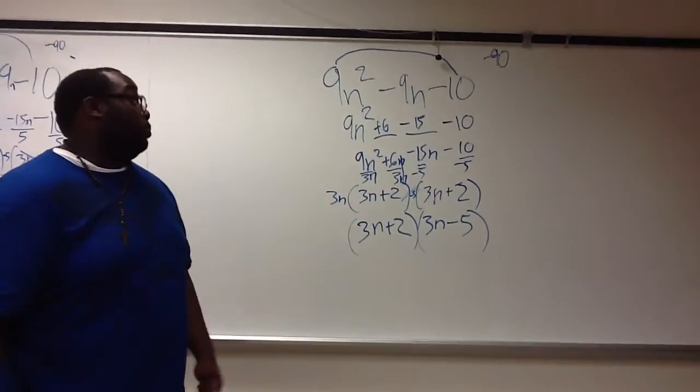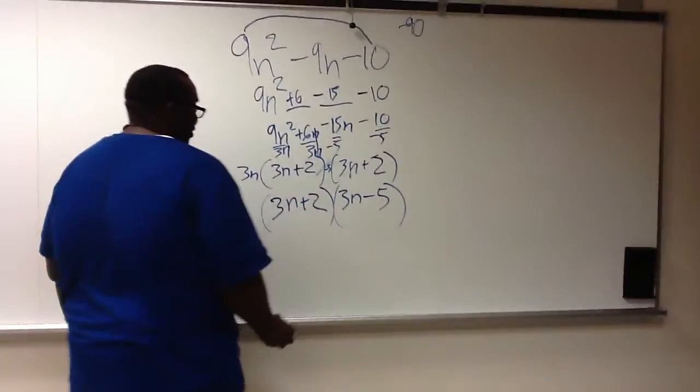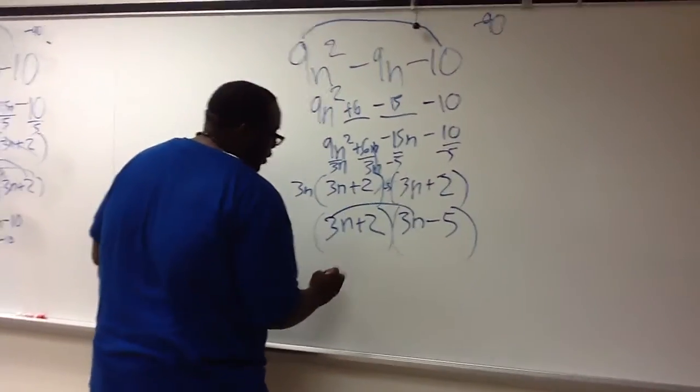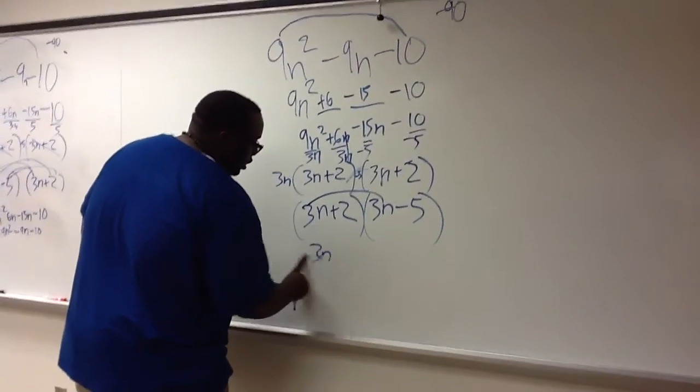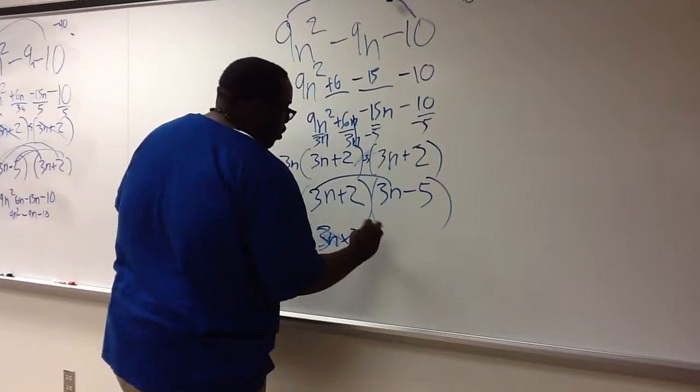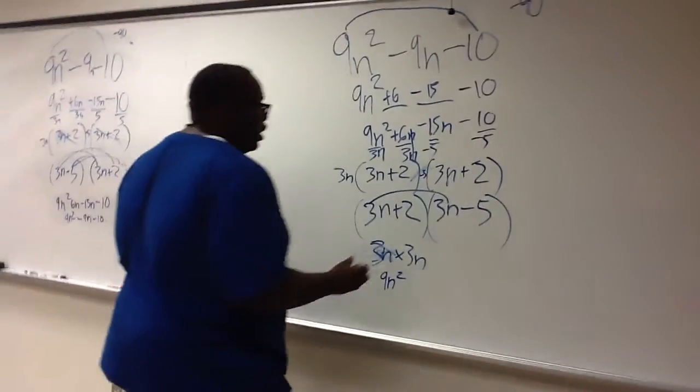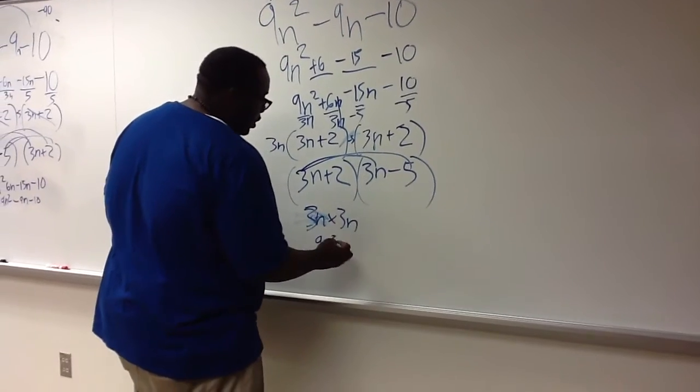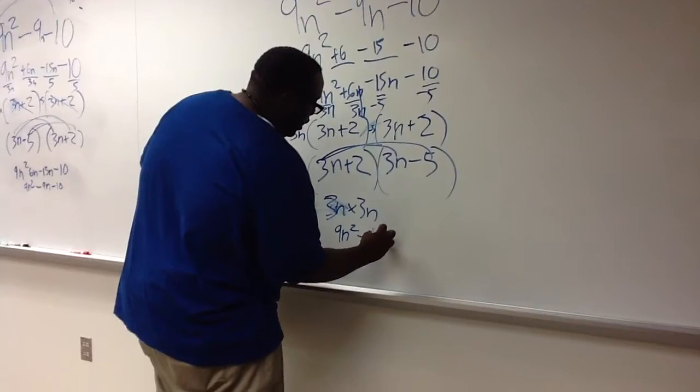Now, that could be the right answer, but let's find out by foiling it. So when you foil this, you have 3n times 3n, which will equal 9n squared. That's your first terms. Then your outside terms will be negative 15n.